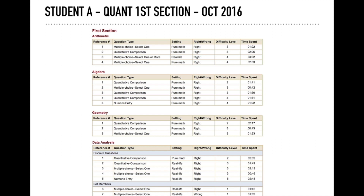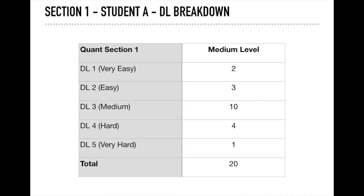Looking deeper at section 1: difficulty level 1 (very easy) questions were 2, easy were 3, medium were 10, hard were 4, and very hard was 1. A lot of focus was given on medium-level questions — 10 medium, 5 easy/very easy, and 5 hard/very hard. That was the case in 2016.